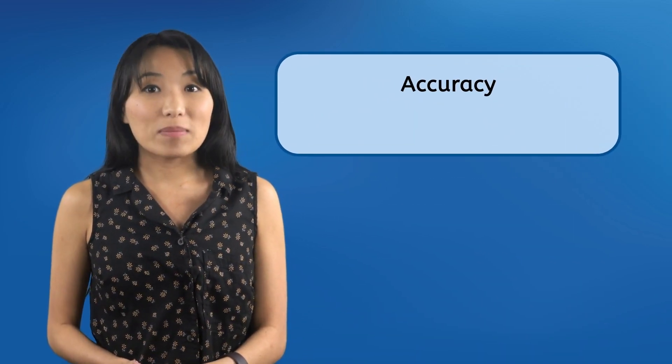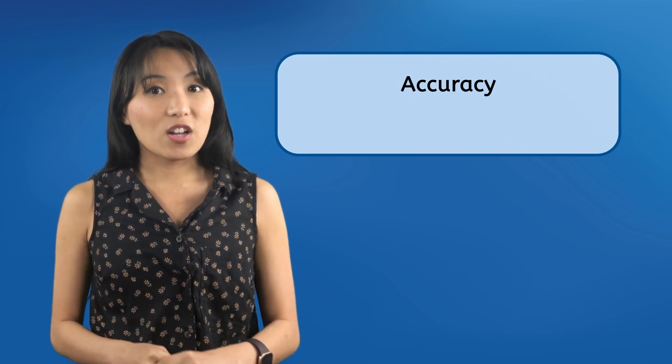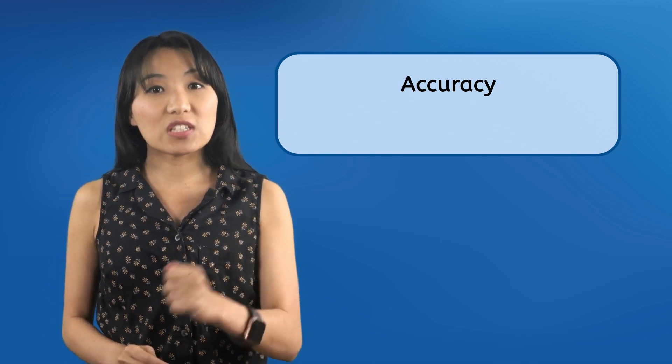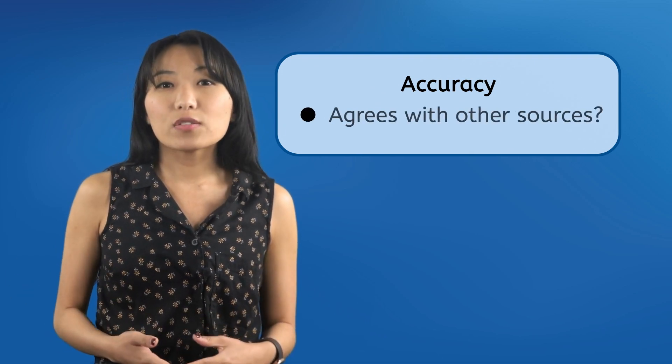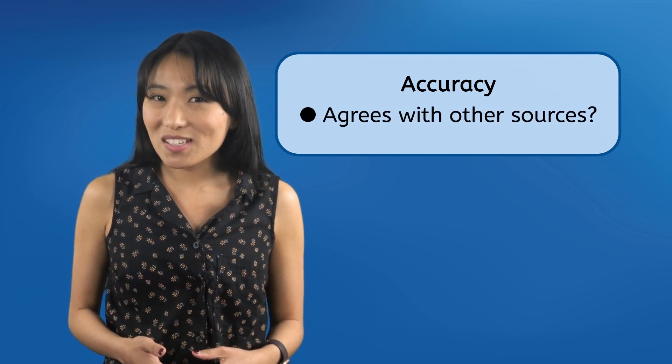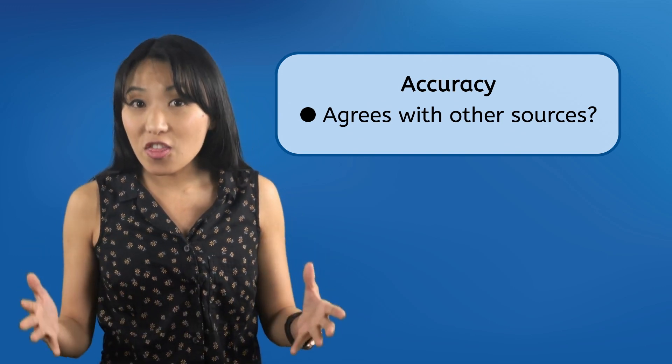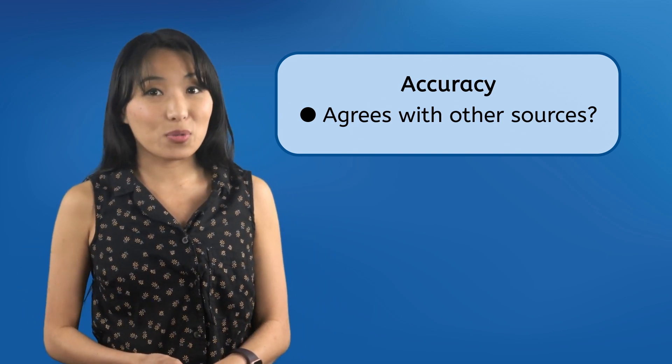The second A in the TRAP test stands for accuracy, or whether the information is sufficiently backed up. Hopefully, as you tested for timeliness, relevance, and authority, you've also noticed whether your source agrees on the major facts with other timely, relevant, and authoritative sources.